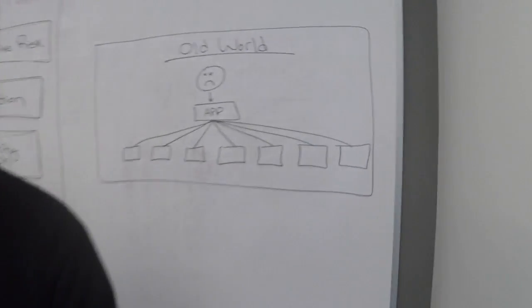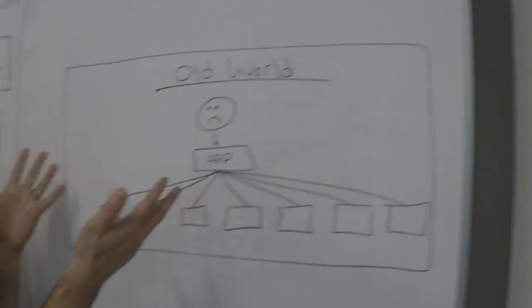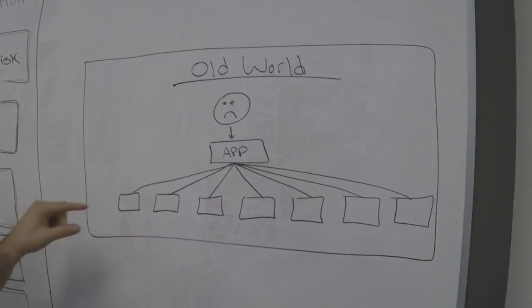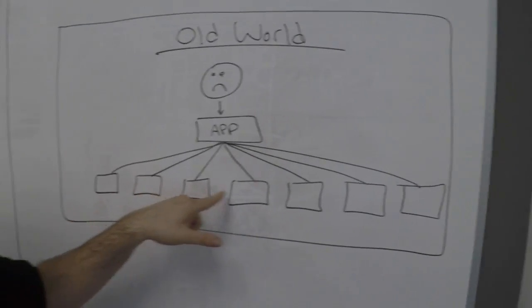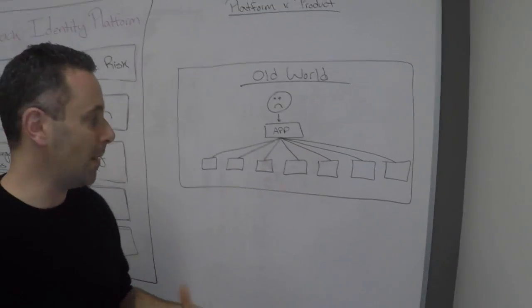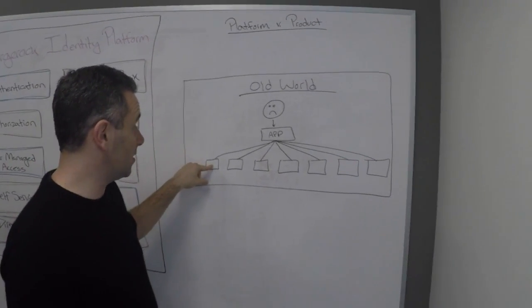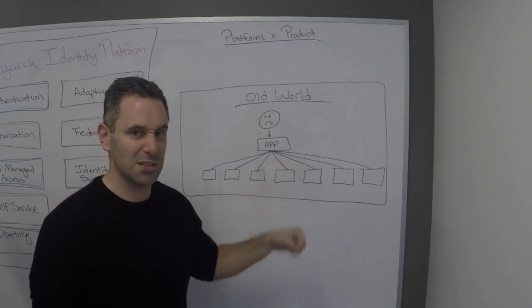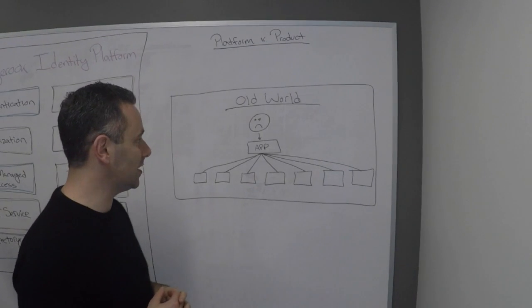This is what this world is showing—it's the legacy world where every new identity service is a completely new set of infrastructure that you need to deploy and manage, and get service integrators to integrate all this stuff to make it seem like a single identity platform.